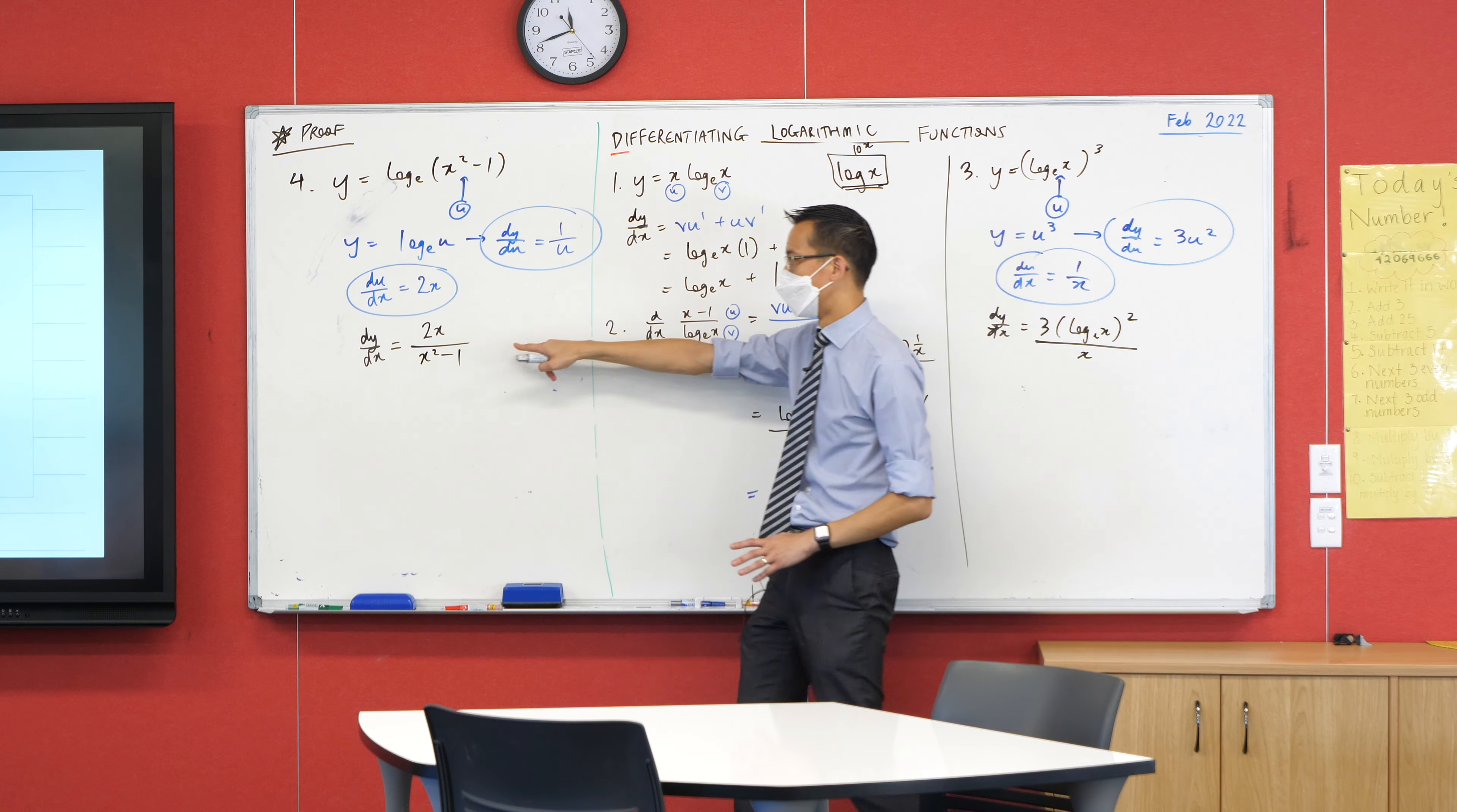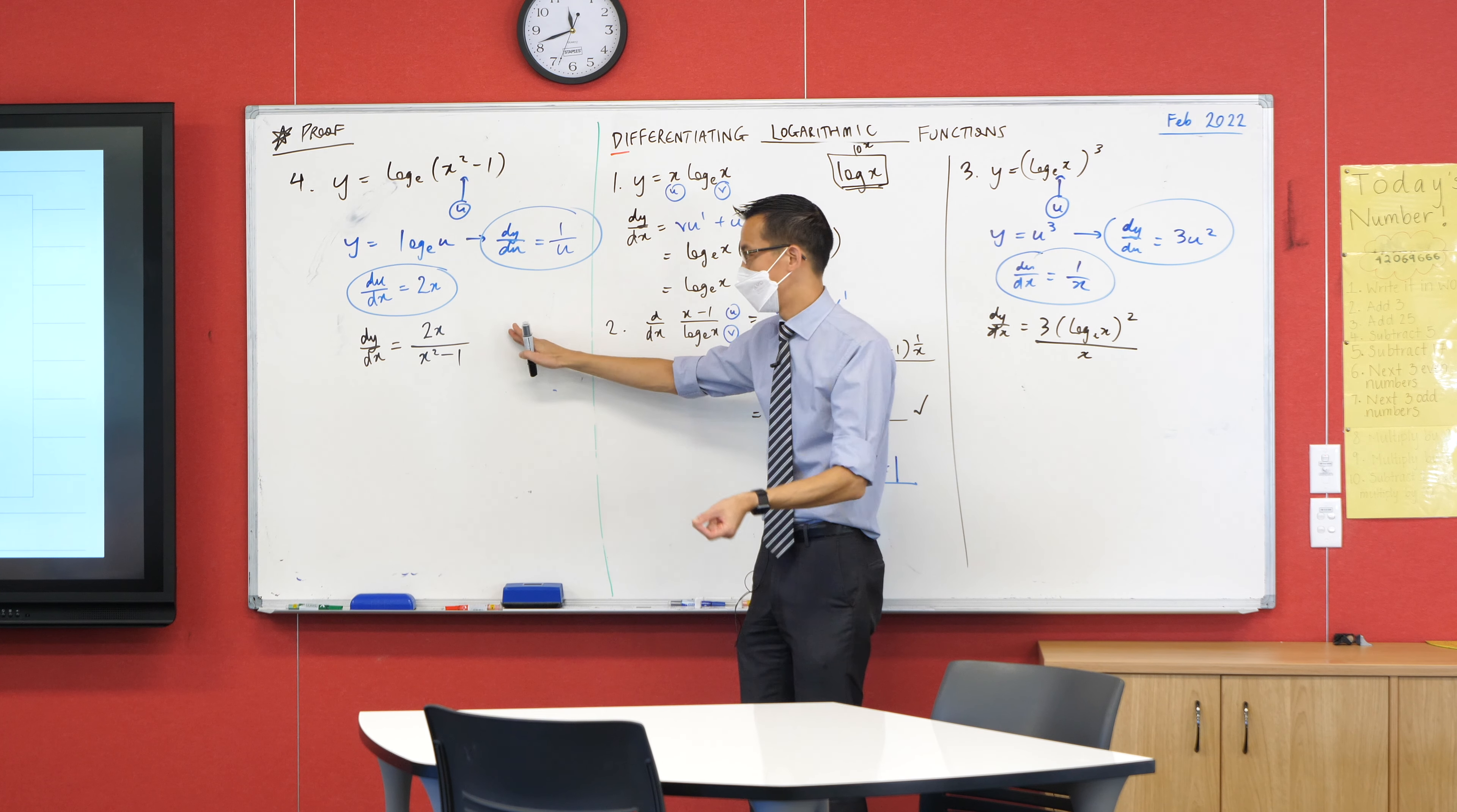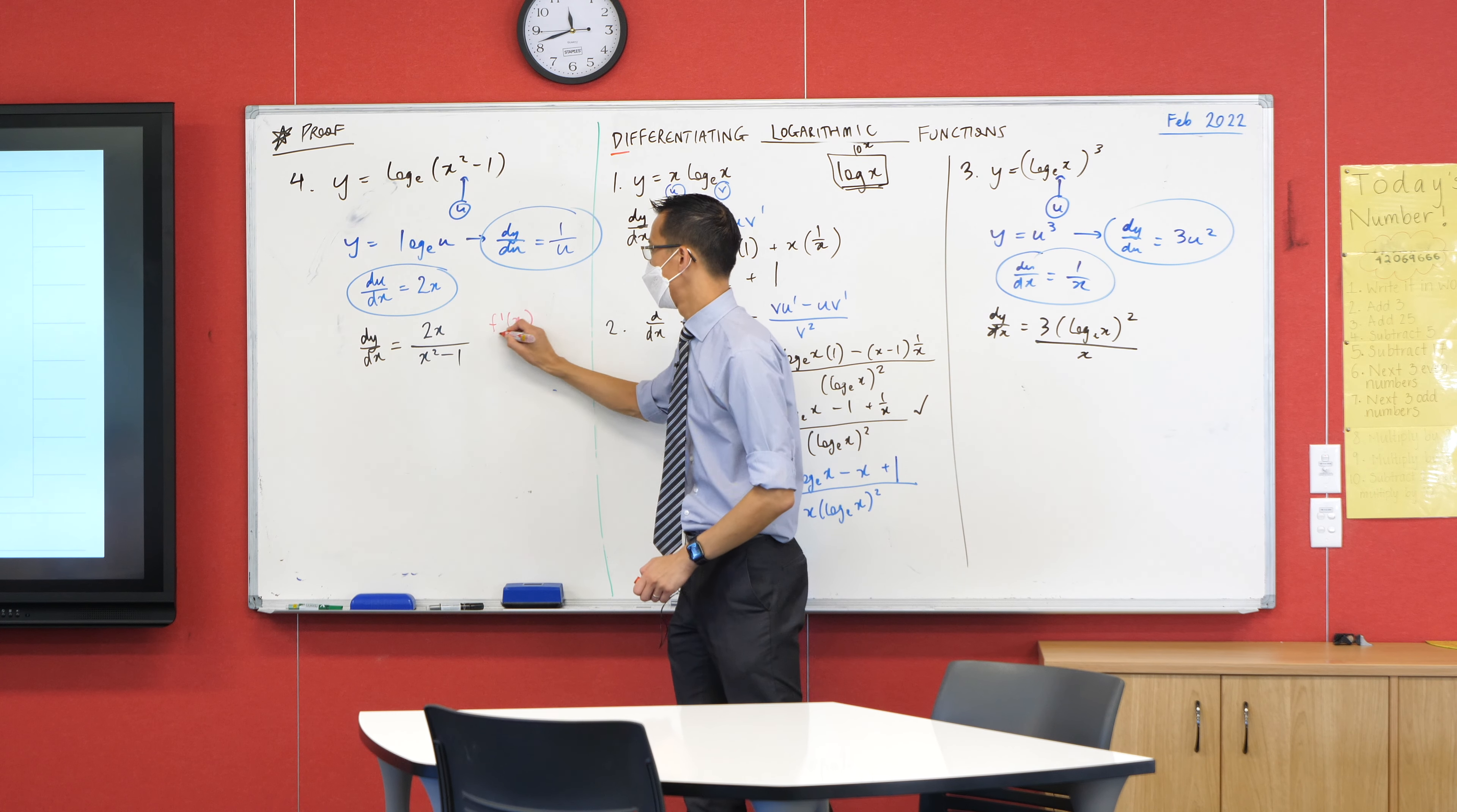Now, this is actually such a neat little form. Do you see, it's just a fraction where the top is the derivative of the bottom. Can I just say that one more time? What we've gotten here is a fraction where the top is the derivative of the bottom. So a shorthand for that, you'll see a lot and you'll even see it on the reference sheet, it's F dash on F.